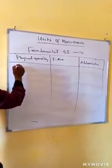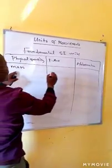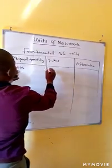The first fundamental SI unit: mass — the name of the unit is kilogram, abbreviation kg. Temperature — the name of the unit is Kelvin, abbreviation K. Length — the name of the unit is meter, abbreviation M. Electric current — the name of the unit is ampere, abbreviation A.